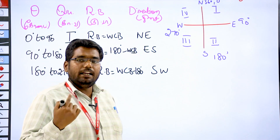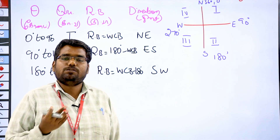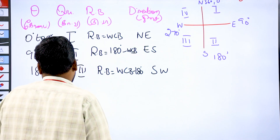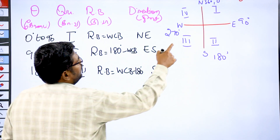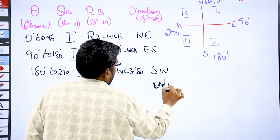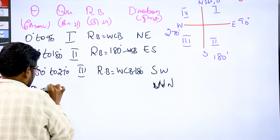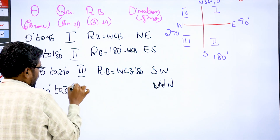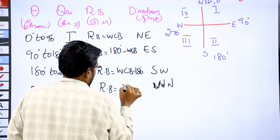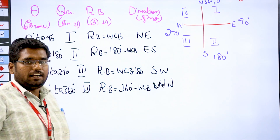In the third quarter we have a minus, so if the answer is negative the bearing is not applicable. The last quarter is West to North, 270 to 360 degrees — the fourth quarter. RB is equal to 360 degrees minus WCB.